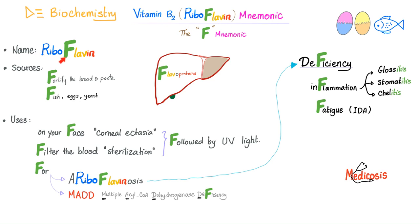Vitamin B2 mnemonic. The name is riboflavin. This is the F mnemonic. Sources: many governments require that you fortify bread and pasta with riboflavin. And then fish,